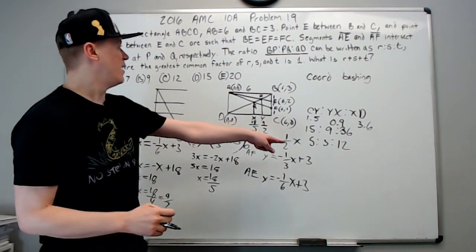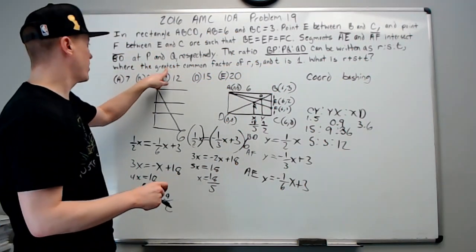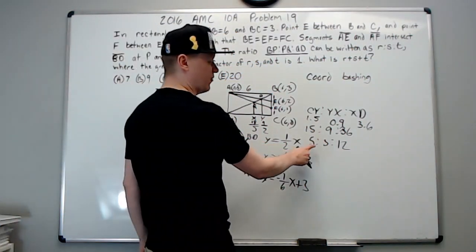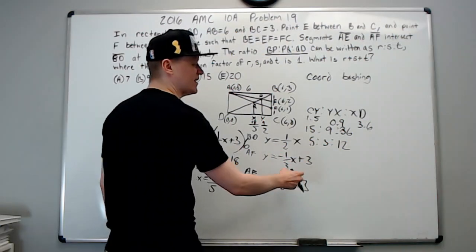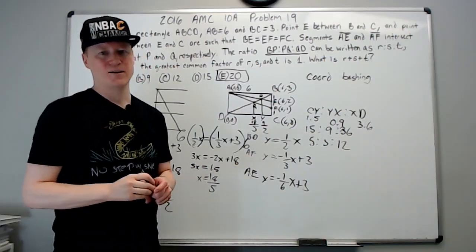That is simplified, there is no common divisors of any of these other than 1, right? The greatest common factor of r, s, and t is 1. Therefore this is r, s, and t. 8 plus 12 is 20, that's the answer. It's E, we're moving on. Zap out.